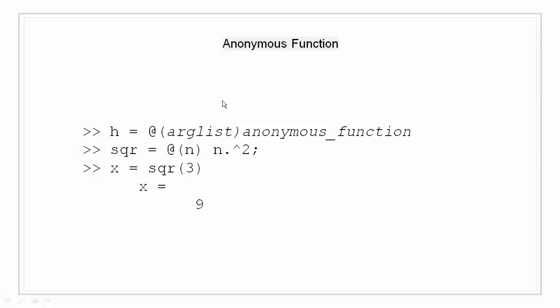So example for the same follows the syntax. We have a function handle sqr with argument n and function is square of n. So we use this function handle just like we would use the function: x = sqr(3) and we pass 3 as an input argument. So the output we get is the square of 3 that is nothing but 9.